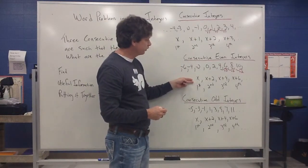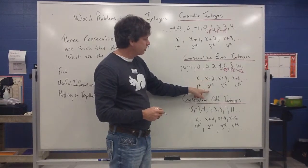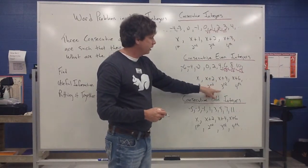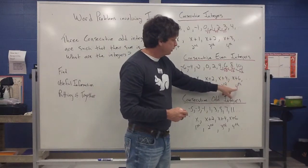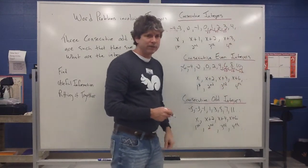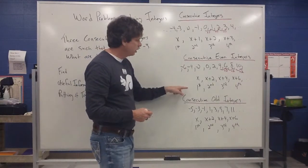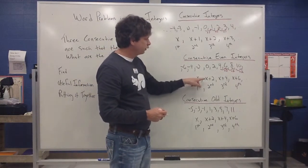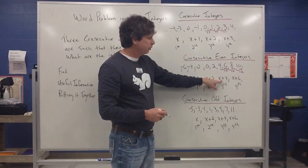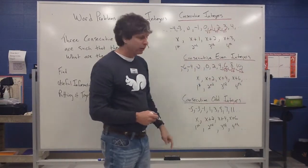So if I say x is the first even integer, I've got to add 2 to that to get to the second, add 4 to get the third even integer, add 6 to get to the fourth even integer, and so forth. So if you're talking about consecutive even integers, we use this notation: x is the first, x plus 2 is the second, x plus 4 is the third, and keep on going like that.